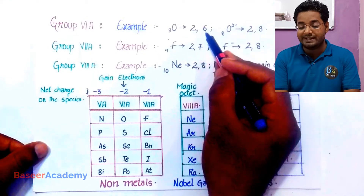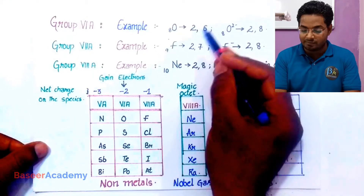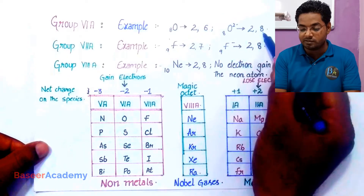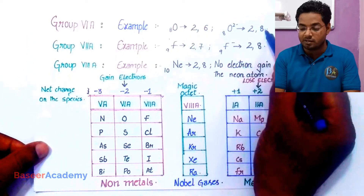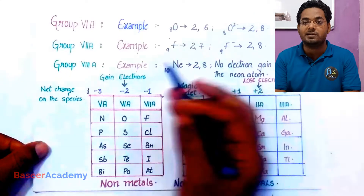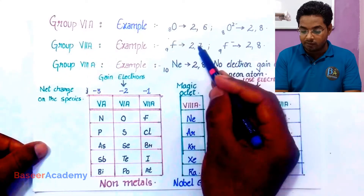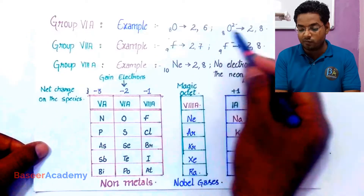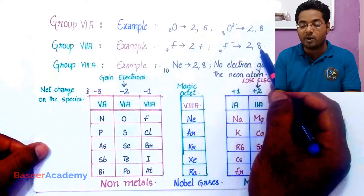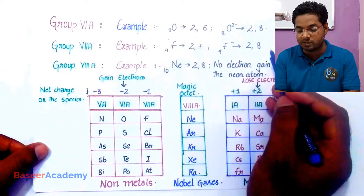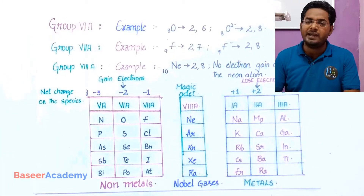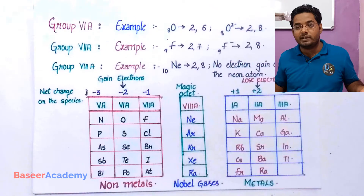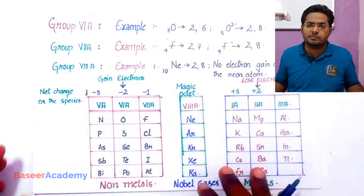Group 6A elements gain two electrons. They have six valence electrons; after gaining two, 6 plus 2 equals 8, so they now have eight valence electrons. Group 7A elements have seven valence electrons and gain one electron so that they have eight — 7 plus 1 is 8. Group 8A elements already have eight valence electrons, so they neither lose nor gain any electrons.